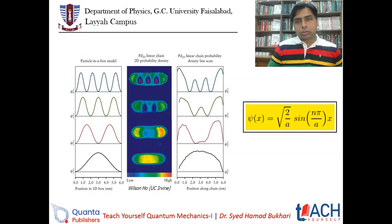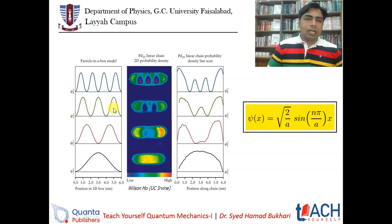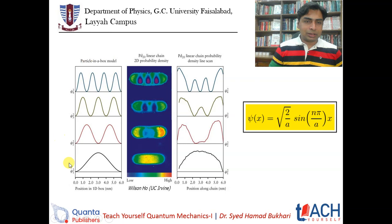For the particle in a box, we calculated the wave function: psi of x equals root 2 over a, times sin(n pi over a times x). We discussed the wave function's explanation — this is psi 1, psi 2, psi 3, psi 4, and so on.